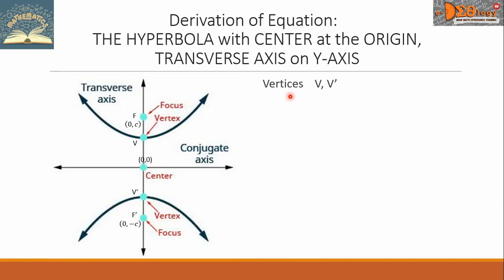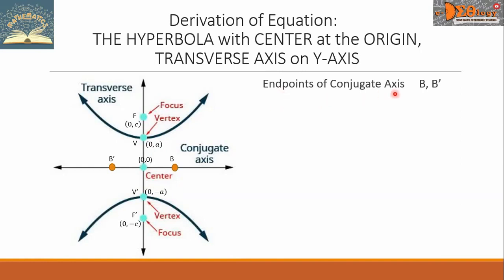Let us go to the vertices, denoted by V for the first vertex and V prime for the second vertex. The line segment connecting the vertices is denoted by 2A, so we can write the coordinates of each vertex as (0, A) and (0, −A) respectively. The endpoints of the conjugate axis are denoted by B and B prime, with the segment connecting them equal to 2B. The coordinates of B and B prime are (B, 0) and (−B, 0).